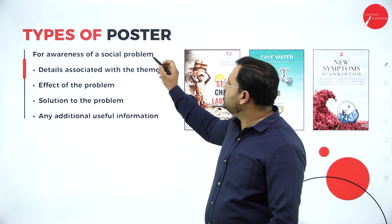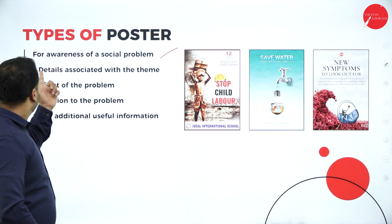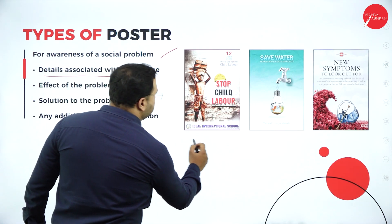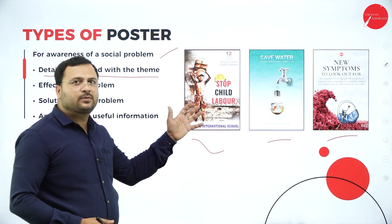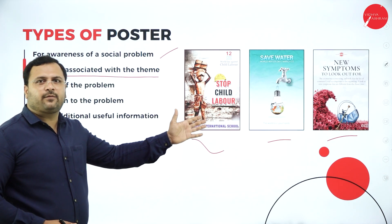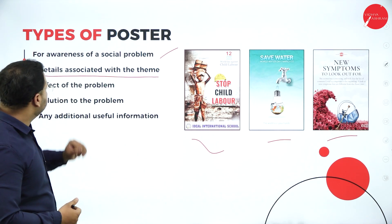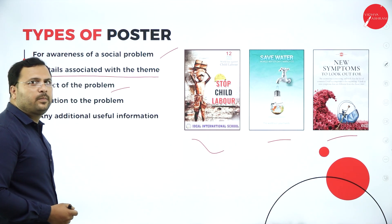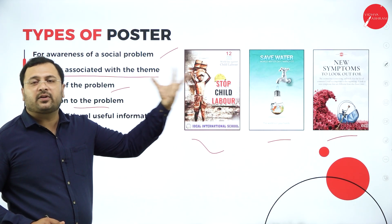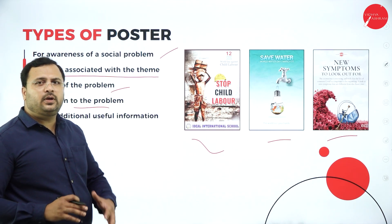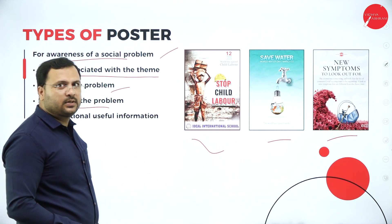Types of posters. The first type is the social awareness poster — for awareness of a social problem. Here you use details associated with the theme, for example: stop child labour, save water, or new symptoms to look out for. When the corona outbreak happened, these posters were on social media. You show the effect of the problem through pictures, provide a solution to the problem, and make people realize its effects. Any additional useful information can also be mentioned. So one purpose of using posters is awareness — this is the awareness poster.